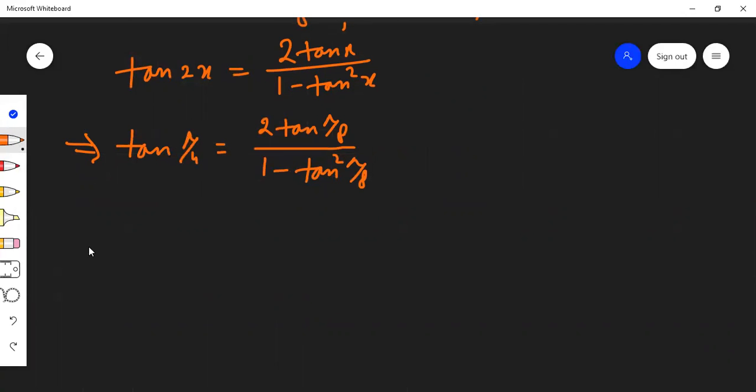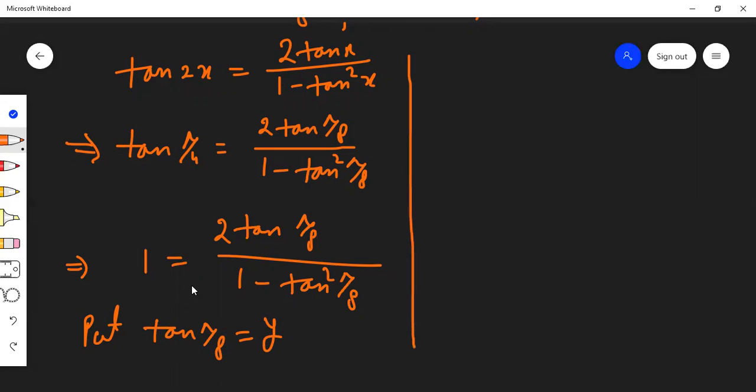Now, as we know tan(π/4) equals 1, it can be substituted. So 1 equals 2tan(π/8) divided by 1 minus tan²(π/8). For simplification, let tan(π/8) equal y. This equation becomes 1 equals 2y divided by 1 minus y².